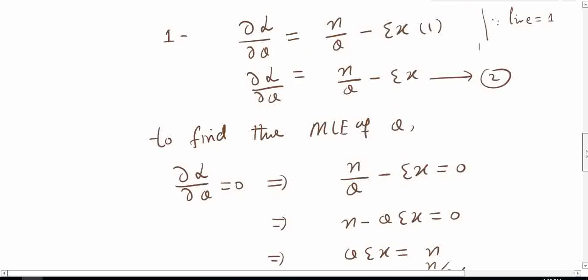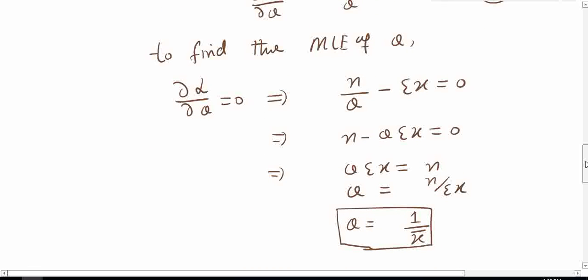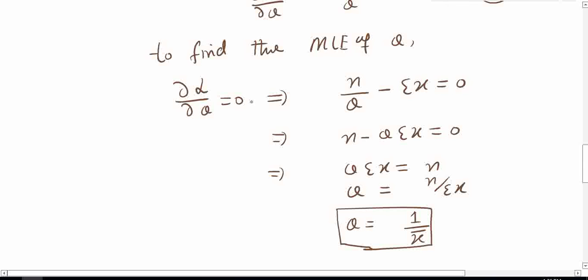We need to find the point at which the slope is zero with respect to theta of the likelihood function, but at this point we are not sure whether it will be a maximum or minimum. So we equate the first partial derivative to zero and solve for theta. This gives us n minus theta times summation x equals 0, so theta times summation x equals n, therefore theta equals n divided by summation x. Dividing numerator and denominator by n, this yields theta-hat equals 1 divided by x-bar.